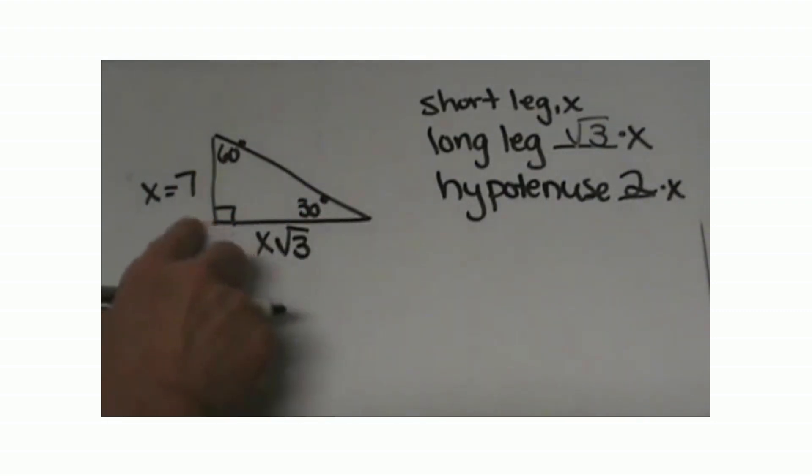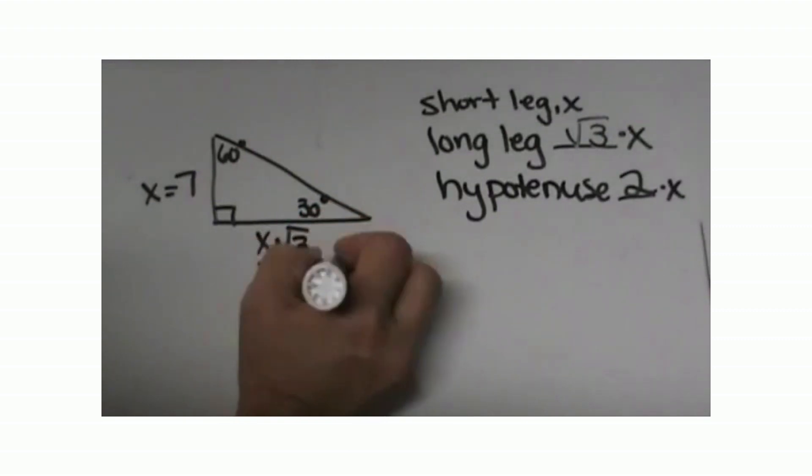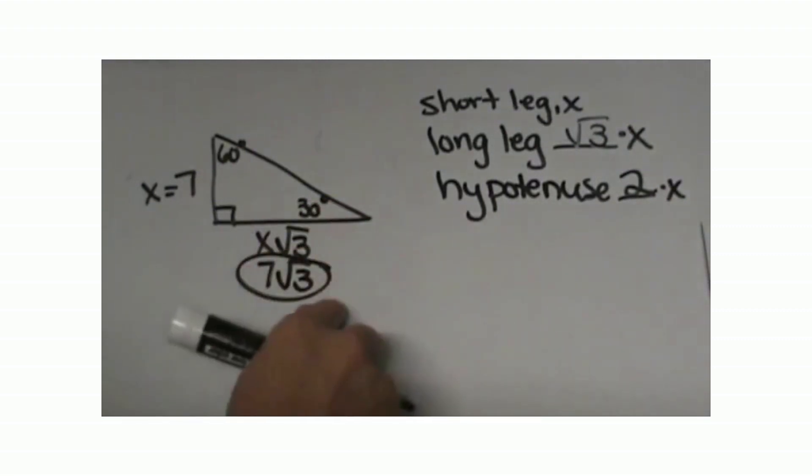We are going to take x root 3, and since we know x is 7, we are going to plug in a 7. 7 square root 3 is the length of the long leg.